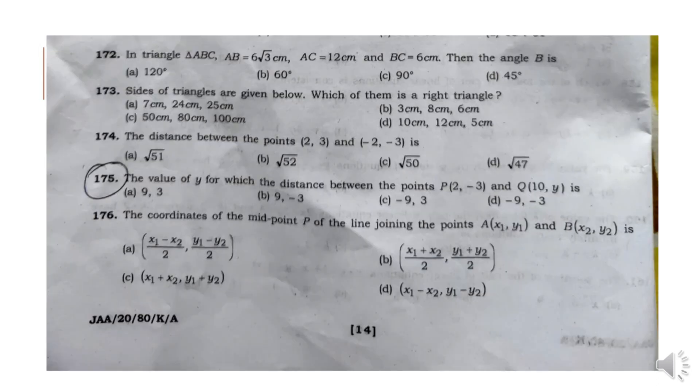Question 172: In triangle ABC, with given side and angle conditions, the angle B is 90 degrees. Option C.